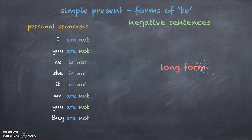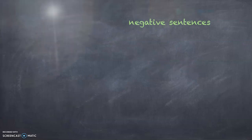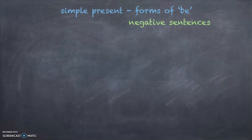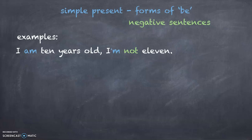This is the long form, and when there's a long form, then there is also a short form. I am ten years old, I'm not eleven. Here you can see the short form of a negative sentence with 'be'. You have an apostrophe M and then the NOT.